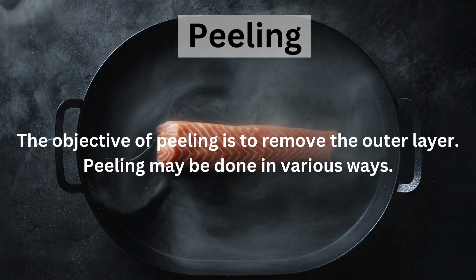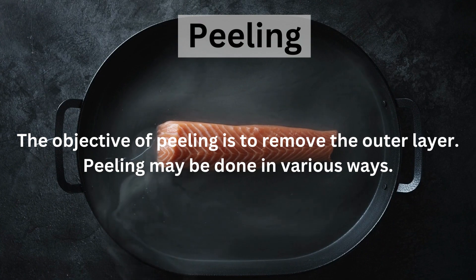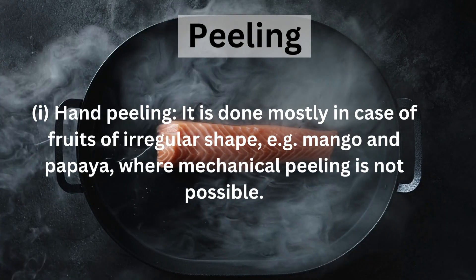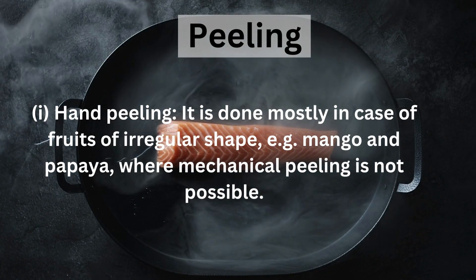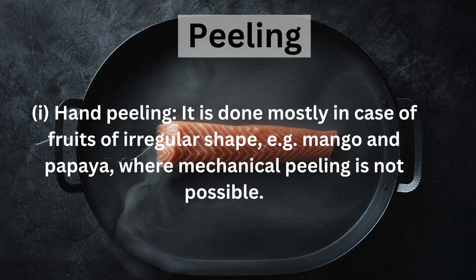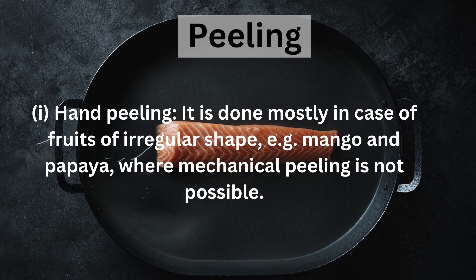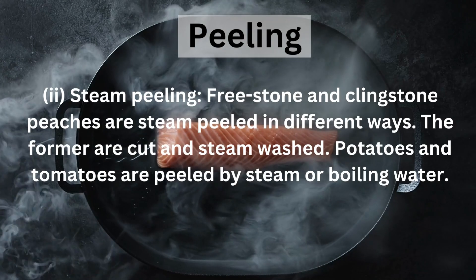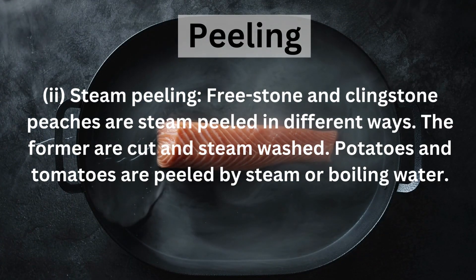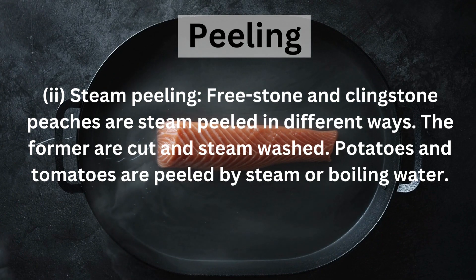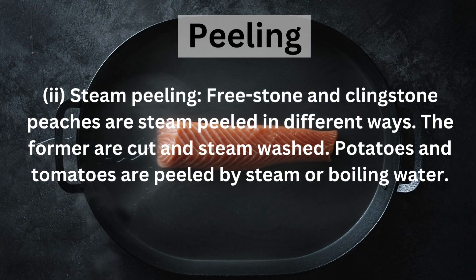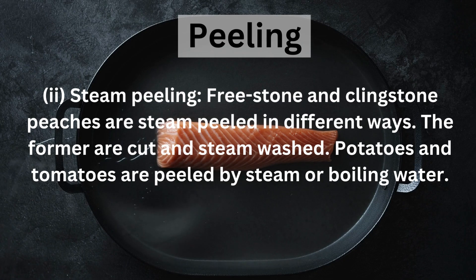Peeling: The objective of peeling is to remove the outer layer. Peeling may be done in various ways. Hand peeling is done mostly in the case of fruits of irregular shapes, e.g. mangoes and papaya, where mechanical peeling is not possible. Stone and clingstone peaches are peeled in a slightly different way. Potatoes and tomatoes are peeled by steam or boiling water.